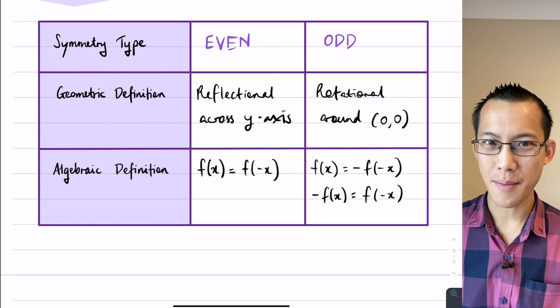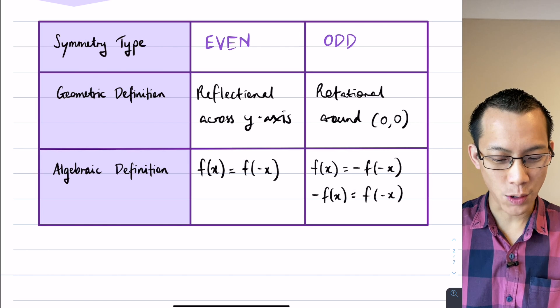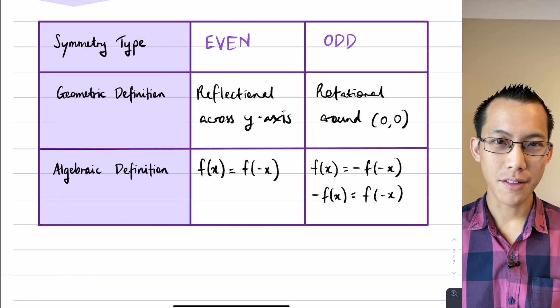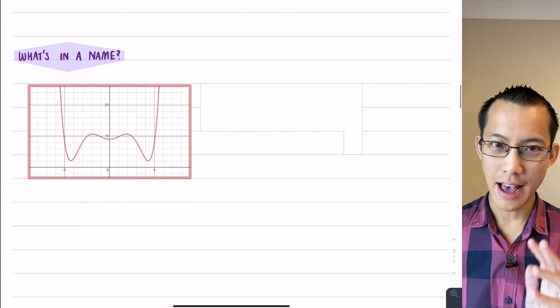Now these names might come out of nowhere. Why would we call them even and odd? Well this is leading us to the next section, right? What's in a name?